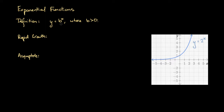Let's have a look at the definition of an exponential function. An exponential function takes this form: y equals b to the power of x, where b is some constant greater than 0. Notice that we haven't got x to the power of b. So for instance if b were 2, like we've graphed here, y equals 2 to the power of x — we haven't got x squared.